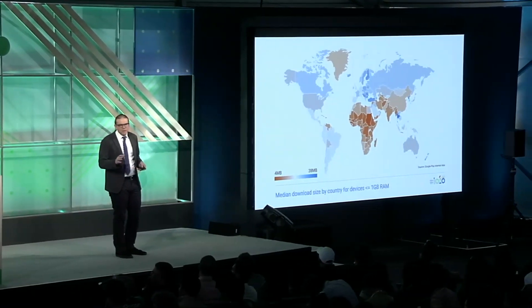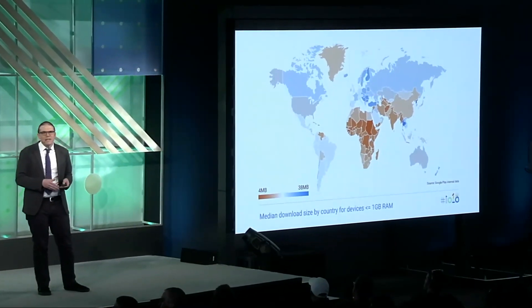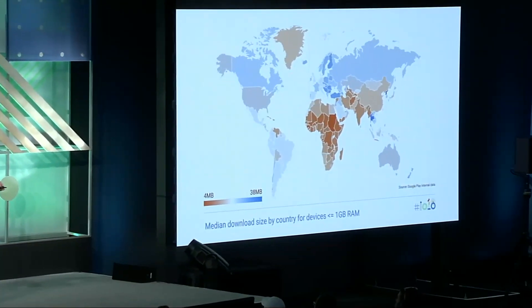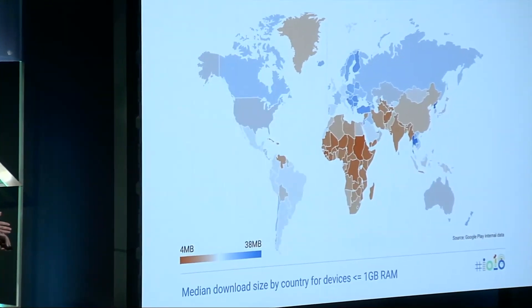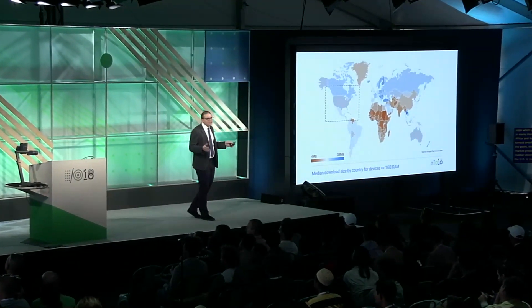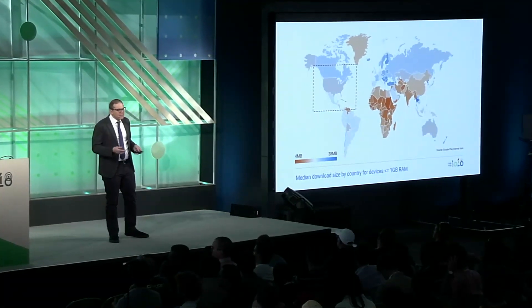In many parts of the world, users pay attention to app size when deciding what to download. This chart shows the median download size country by country for devices with less than or equal to one gigabyte of RAM. In countries with cheap data or strong network reliability, users have a natural tendency to prefer larger apps. But in many markets, particularly across Africa and Asia, we see a clear trend towards smaller apps. Importantly, the US is roughly right in the middle of our global minimum and maximum, implying that roughly 50% of US users also prefer smaller apps.